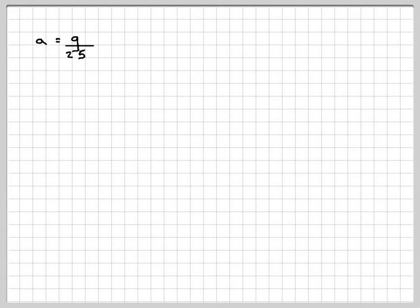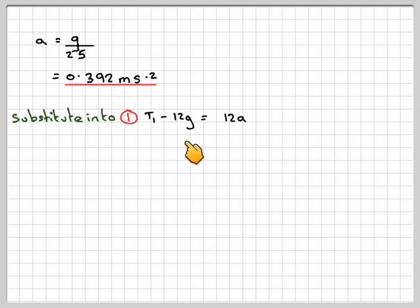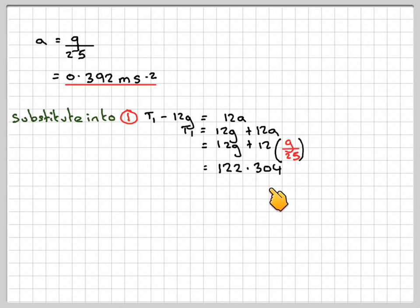So going over here, there's my acceleration. Here is the numerical equivalent, 0.392 meters per second squared. So if we now substitute that value into equation 1. So equation 1 was T1 minus 12g is equal to 12a. So rewriting that, we get T1 is 12g plus 12a. So that's going to be 12 times g plus 12 times g over 25. And then we're going to have 100, that gives me 122.304 Newtons, which is 122 Newtons.